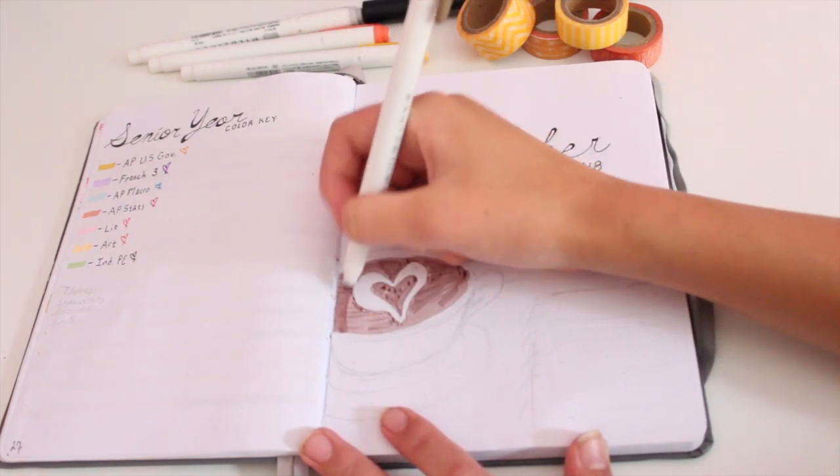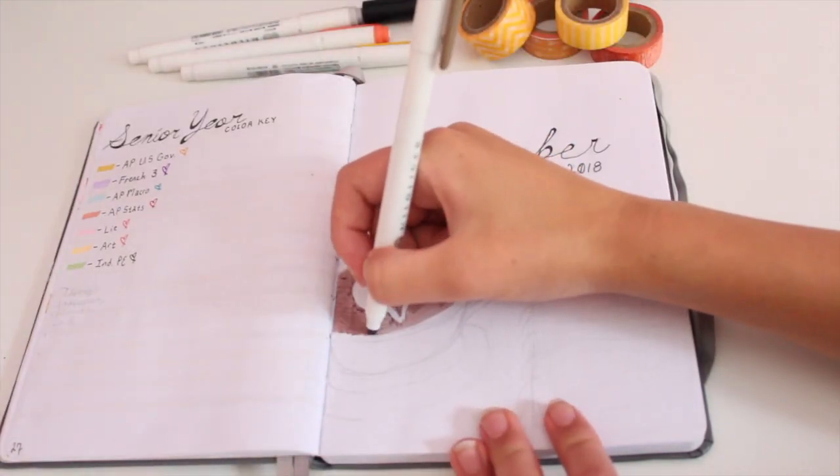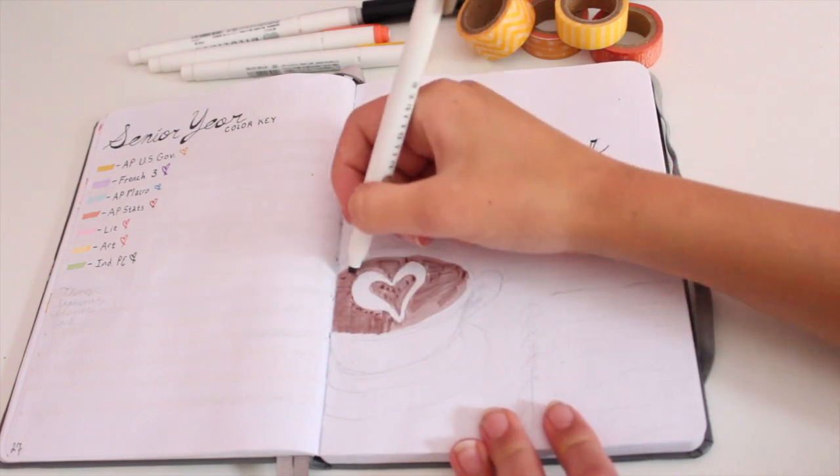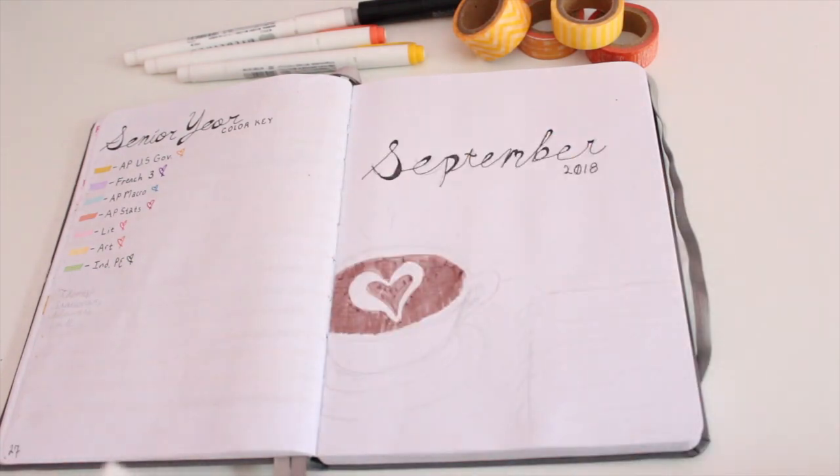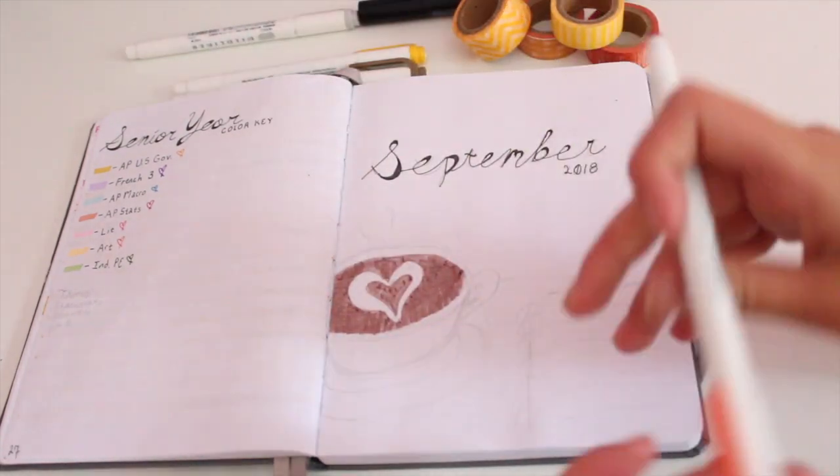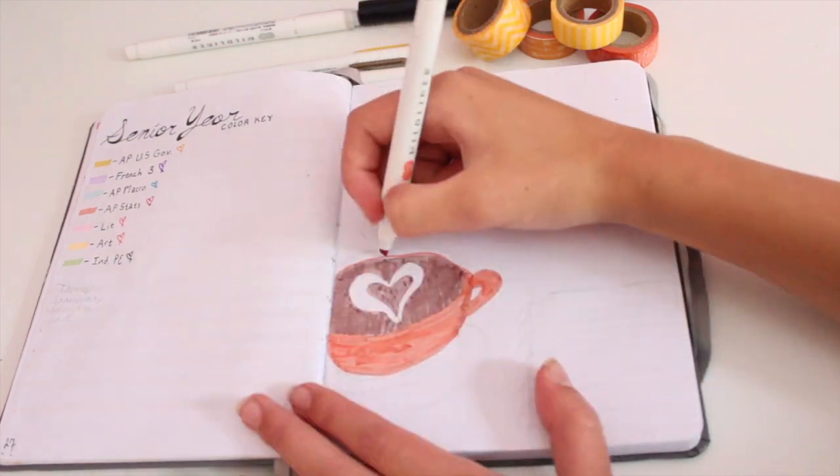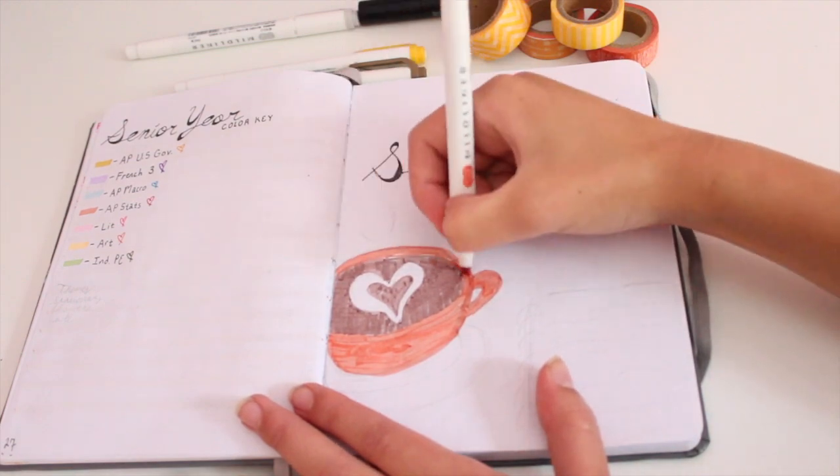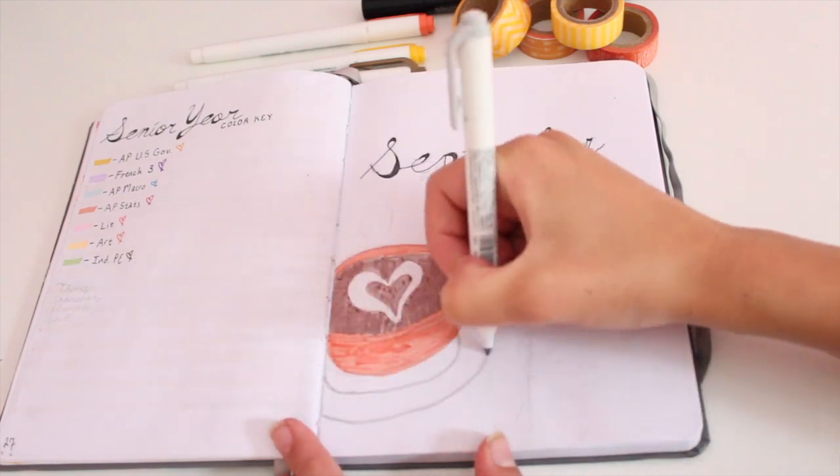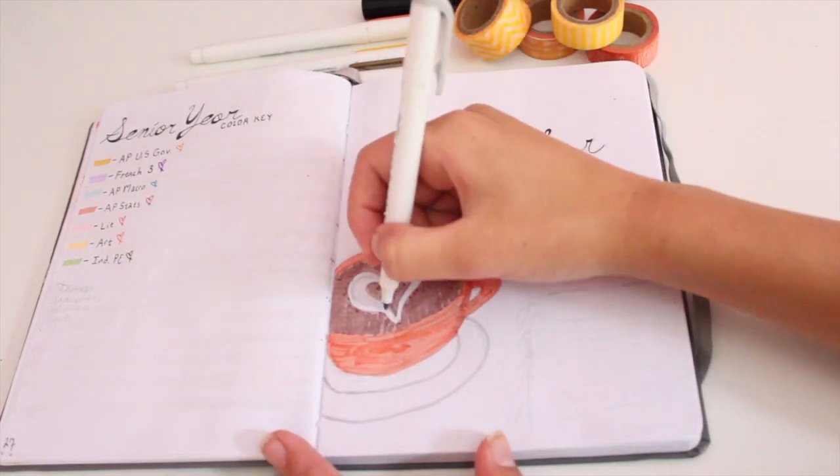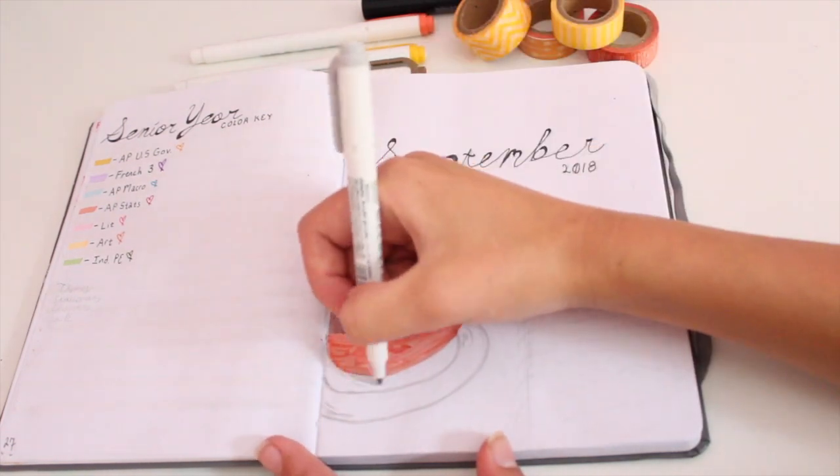I also decided to doodle a latte because I'm always drinking coffee, but especially during school time when I'm not getting as much sleep and I need to stay caffeinated. I also decided that I wanted to do a notebook and have a spiral notebook because when you're taking notes, you usually take them in a notebook. And I decided to use my mildliners for this and I decided to create a color scheme of this red, brown, and yellow.